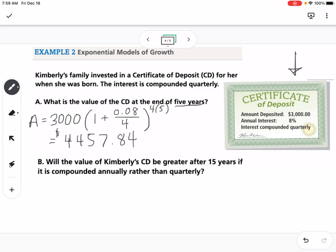So part B says, will the value of Kimberly's CD be greater after 15 years if it's compounded annually or quarterly? So we need to do two calculations. We're going to start with annually, so I'm going to use 1 for my n value, so 0.08 over 1, raised to the 1 times 15 this time.